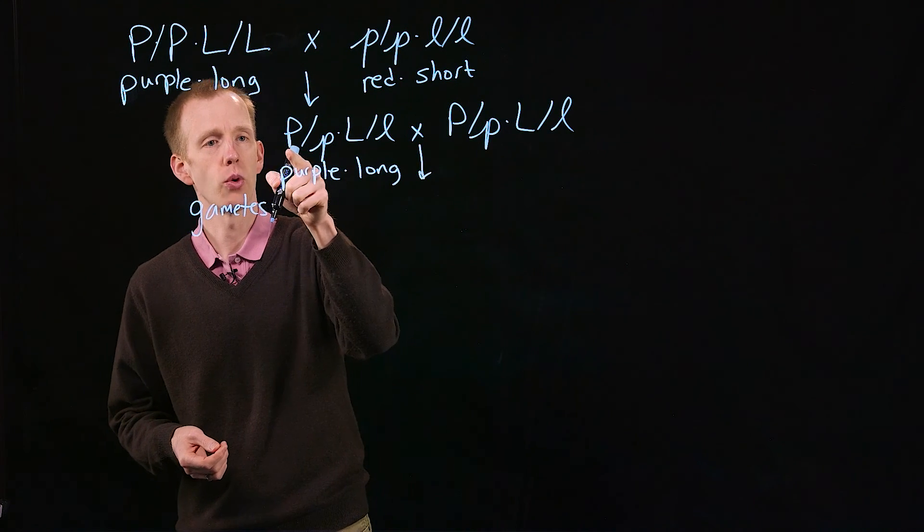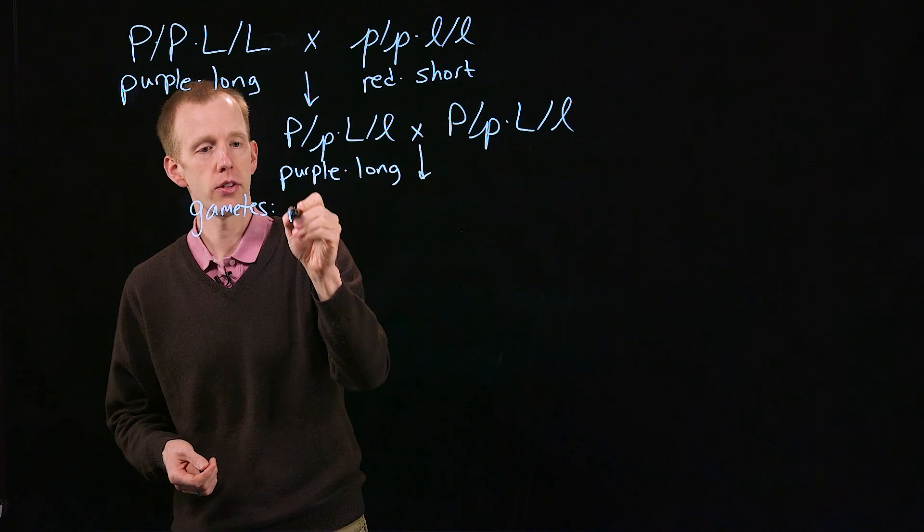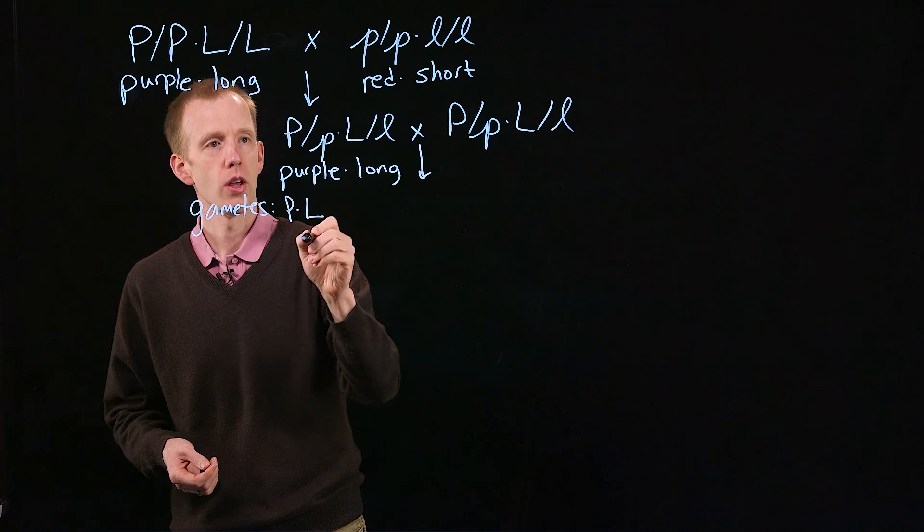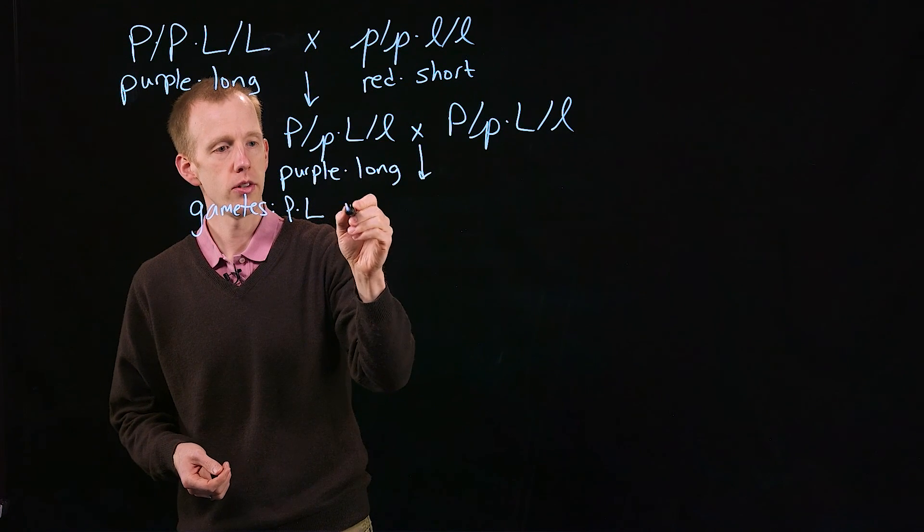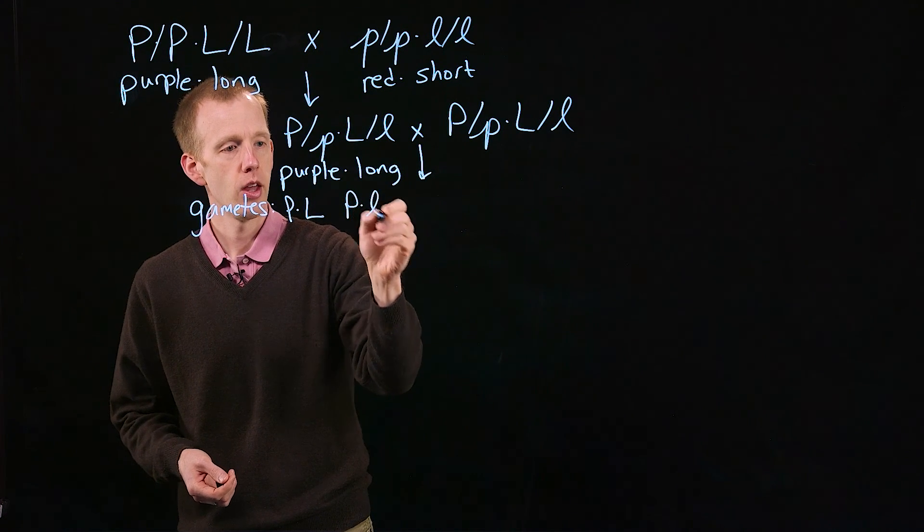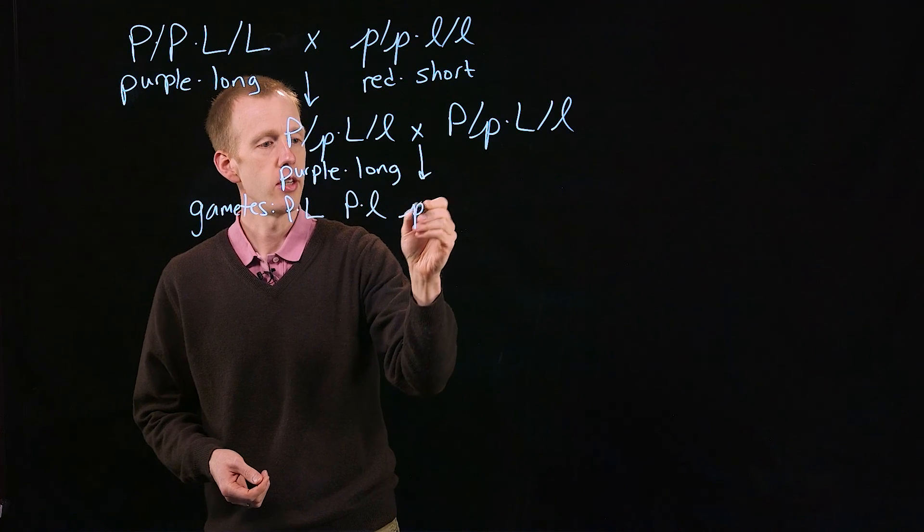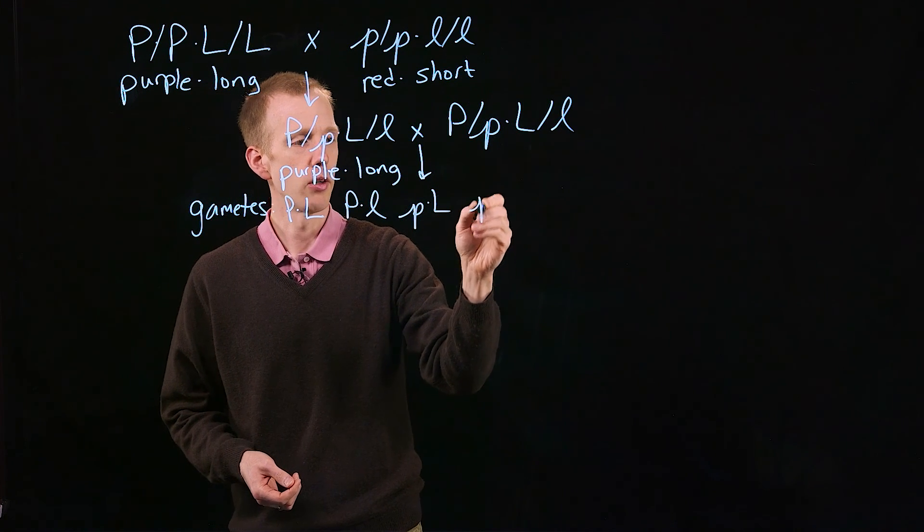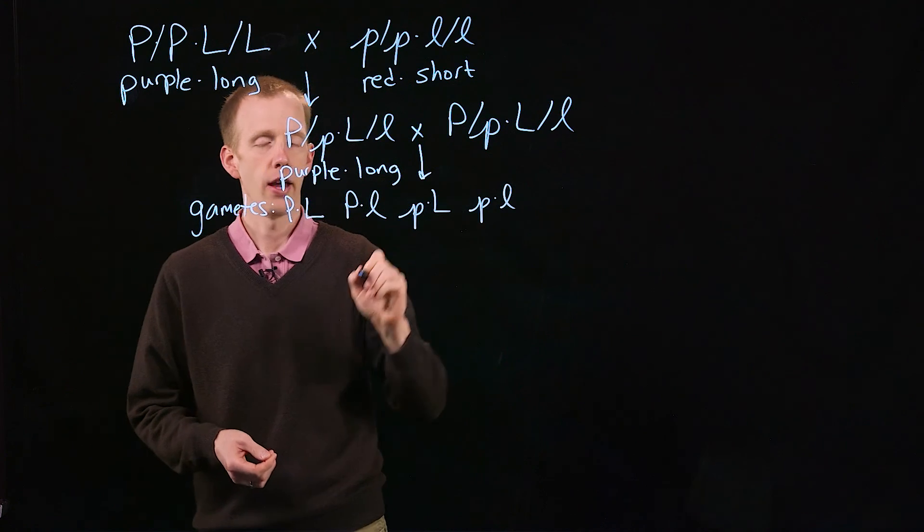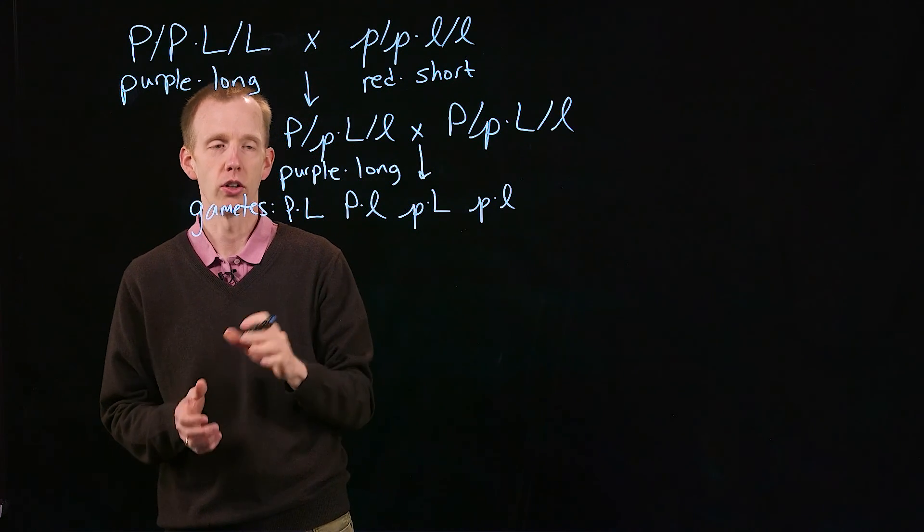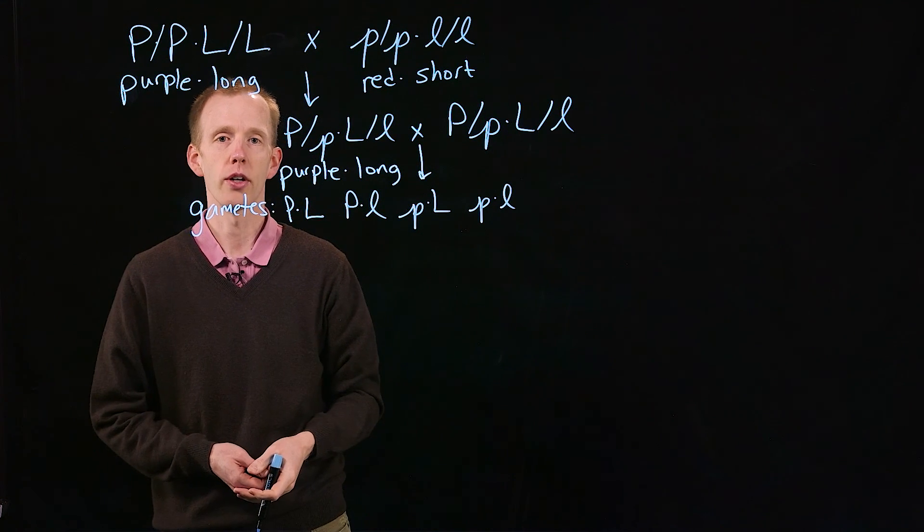The parents have the same genotypes, so we'll have big P's with big L's, big P's with little L's, little P's with big L's, and little P's with little L's. This was all part of Mendel's second law of independent assortment that we saw earlier.